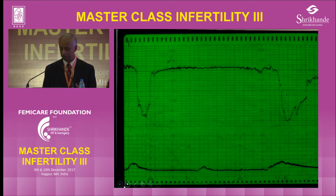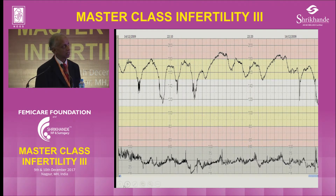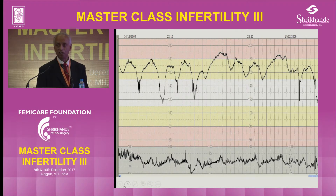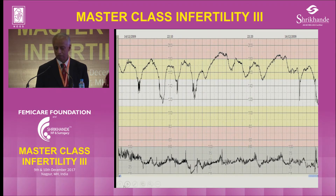The next case: she is 6 cm, not on oxytocin, but has tachycardia of 180 and hardly any variability. This baby also will run into trouble very soon. Absent variability is something you have to be very worried about.